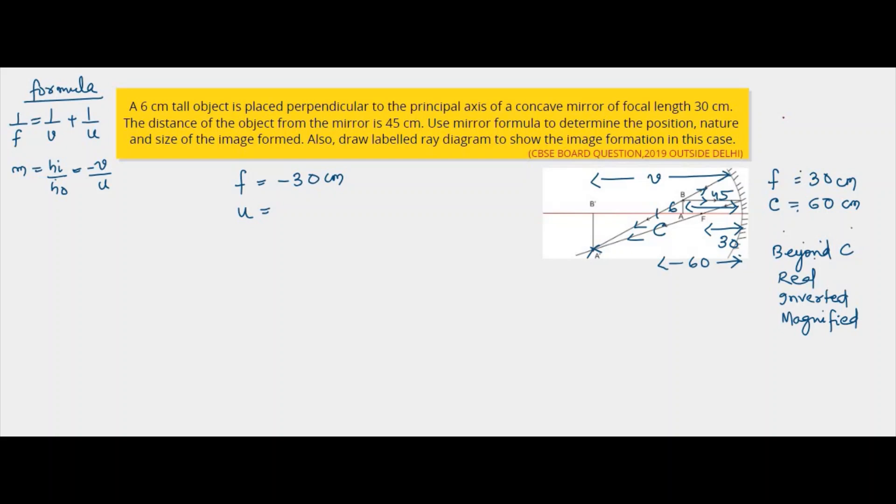And so to measure the object distance also, we have to go from the pole towards the left. So it is negative 45. Now we have to find out what is V. So using the mirror formula, 1 by F is 1 by V plus 1 by U. So we get here 1 by V will be 1 by F minus 1 by U.